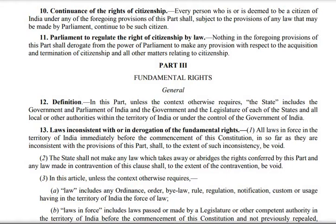Parliament of India and the government and the legislature of each of the states. So four things are: the government of India, the government of the states, the Parliament of India, and the state legislatures. Then all local authorities — municipalities, panchayats, etc. So that makes five. All local authorities will be included.